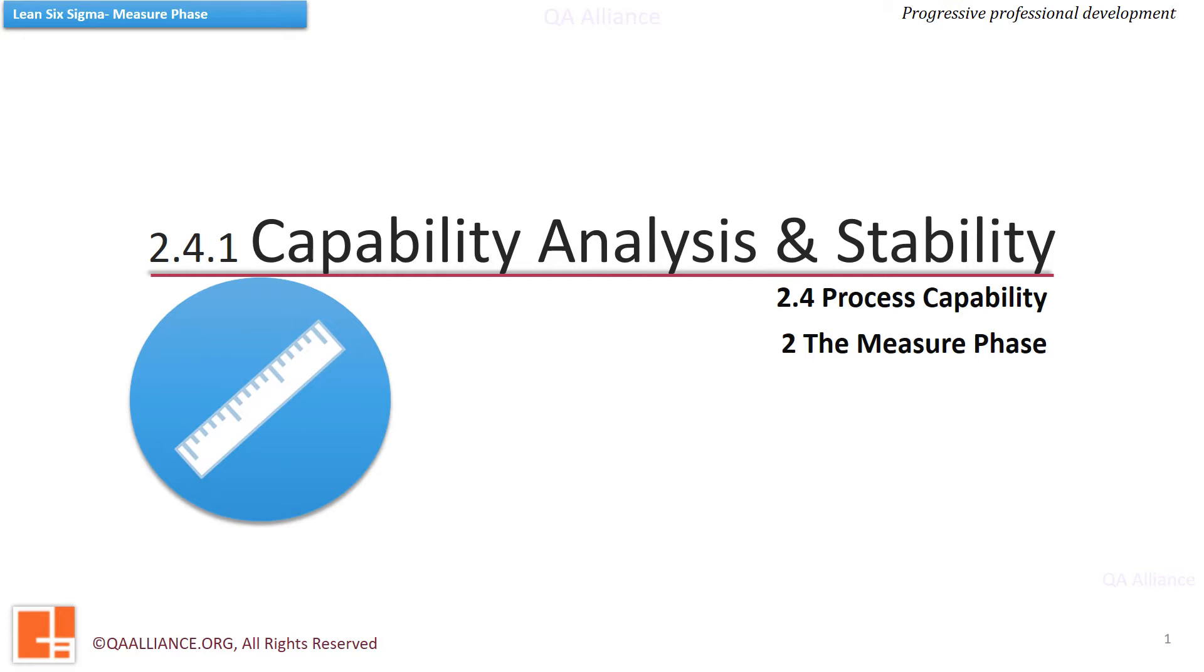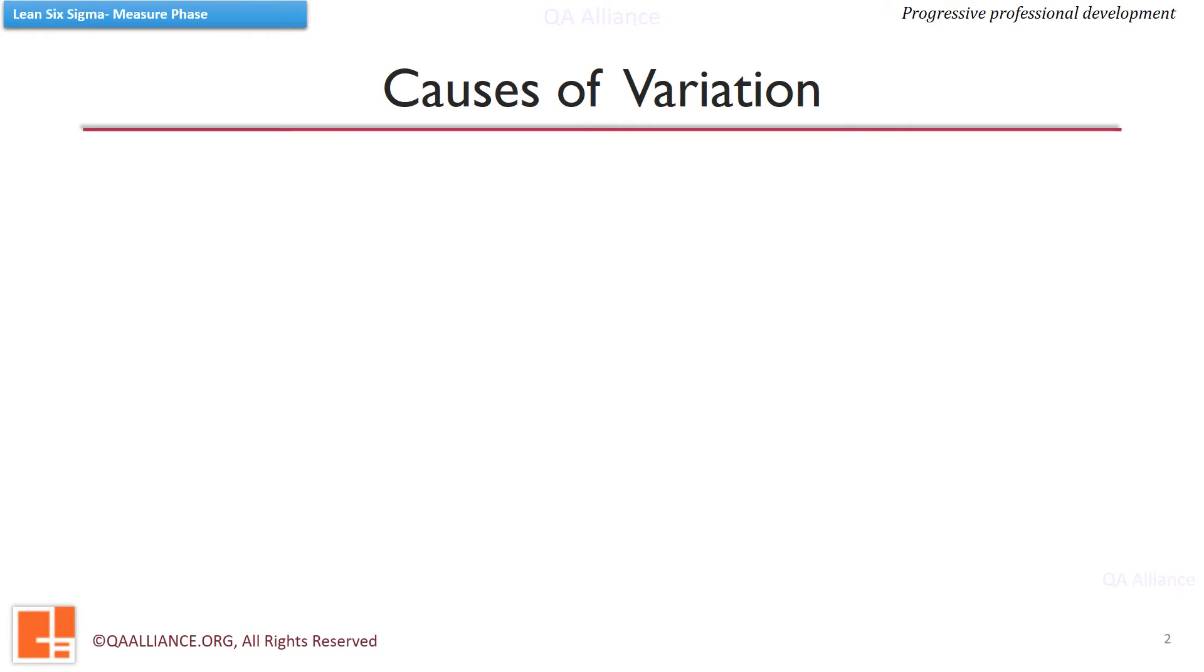In this lesson, we'll cover some basic fundamentals. In any process there are two causes of variation: one is the special cause and other is the common cause.